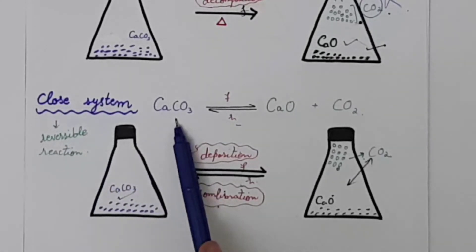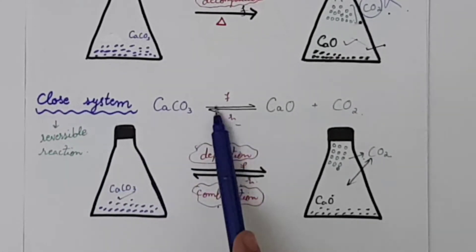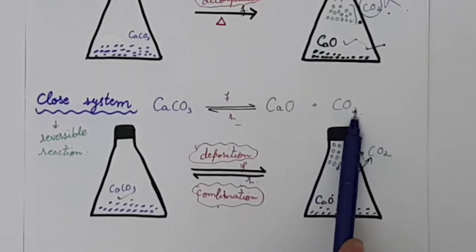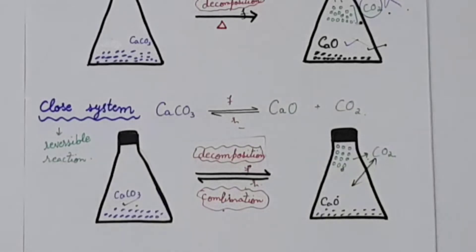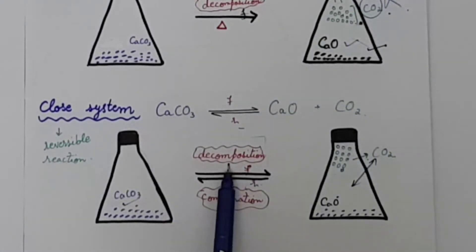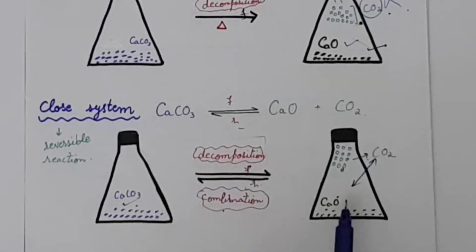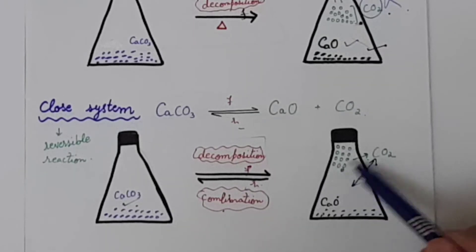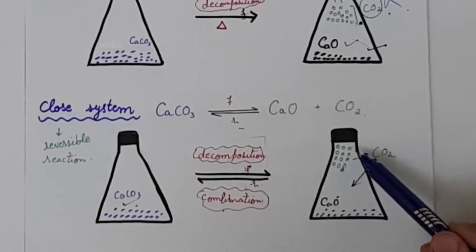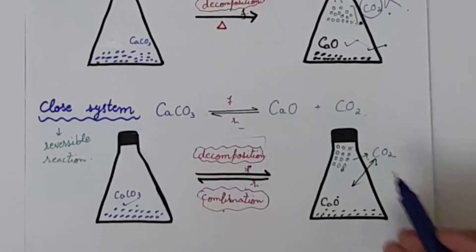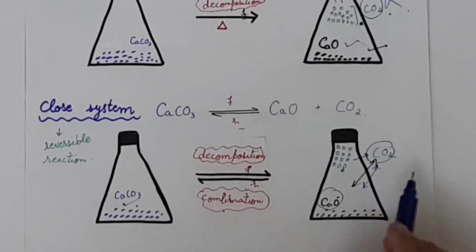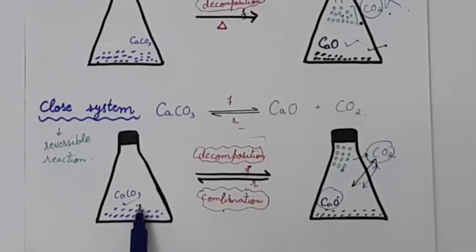Now let's look at the same reaction in a closed system. In a closed system, calcium carbonate is heated and the forward reaction occurs, giving you two products: calcium oxide and carbon dioxide. Because the system is closed, the carbon dioxide gas cannot escape — it accumulates at the top of the flask and remains trapped inside.